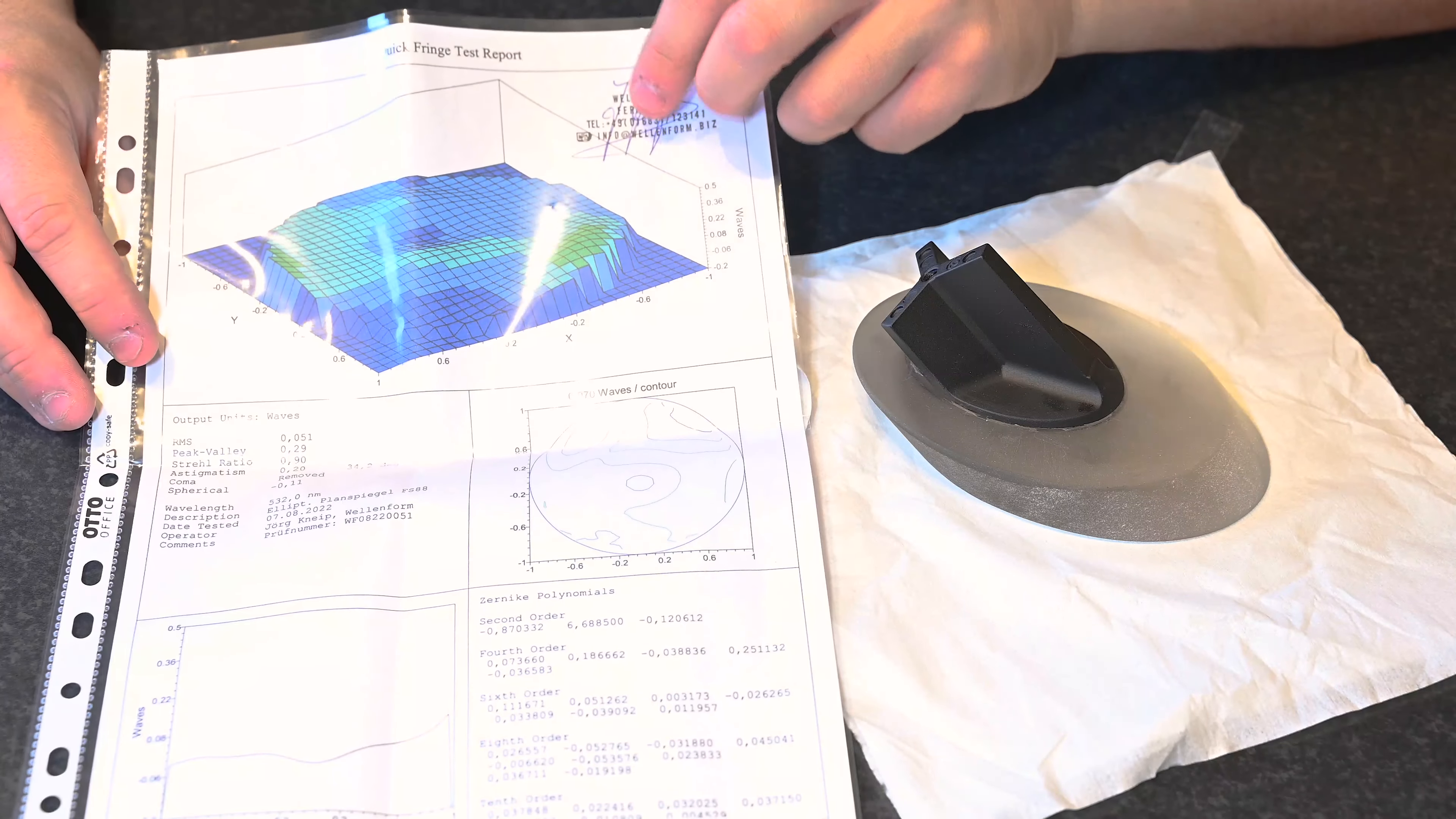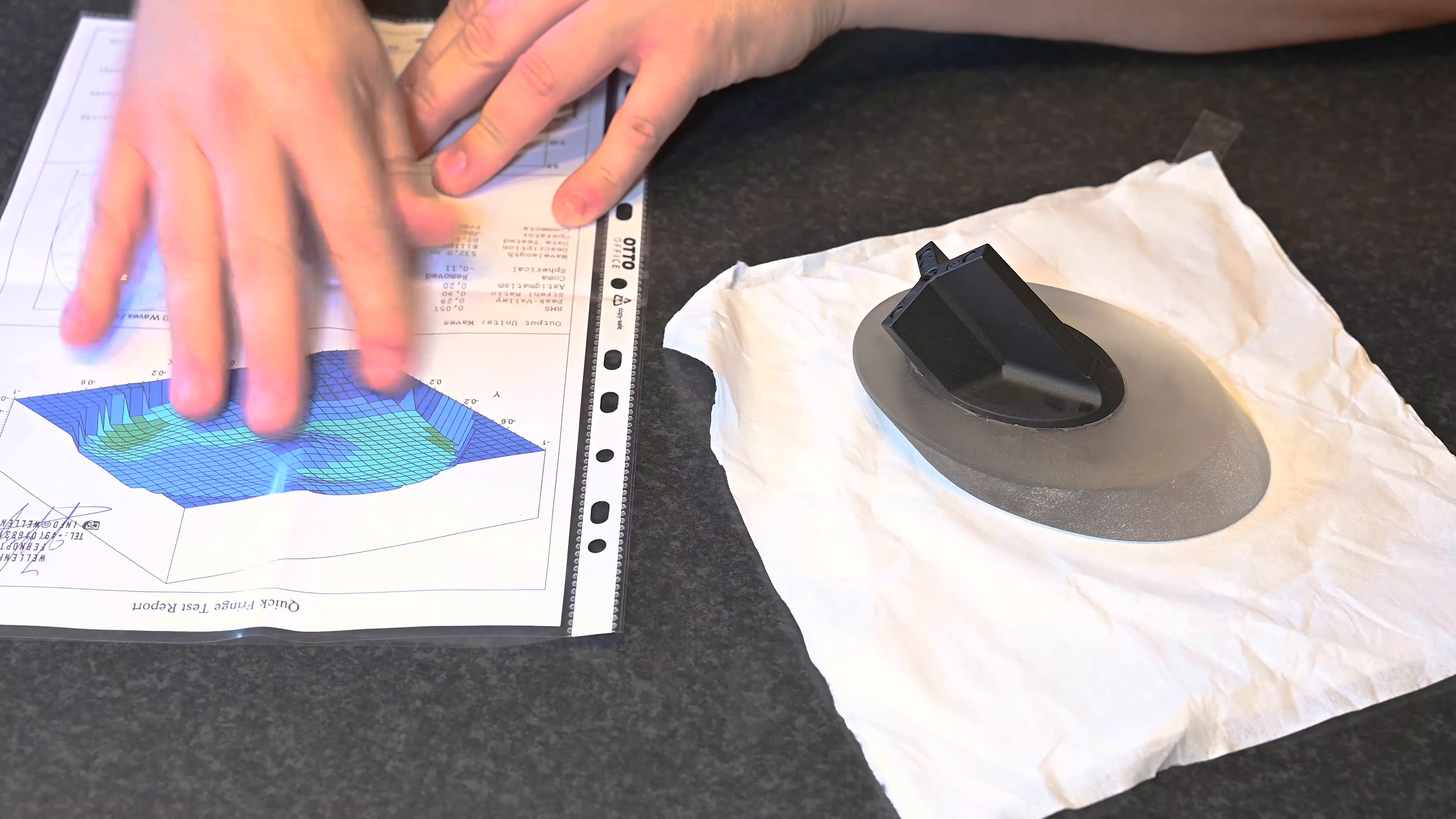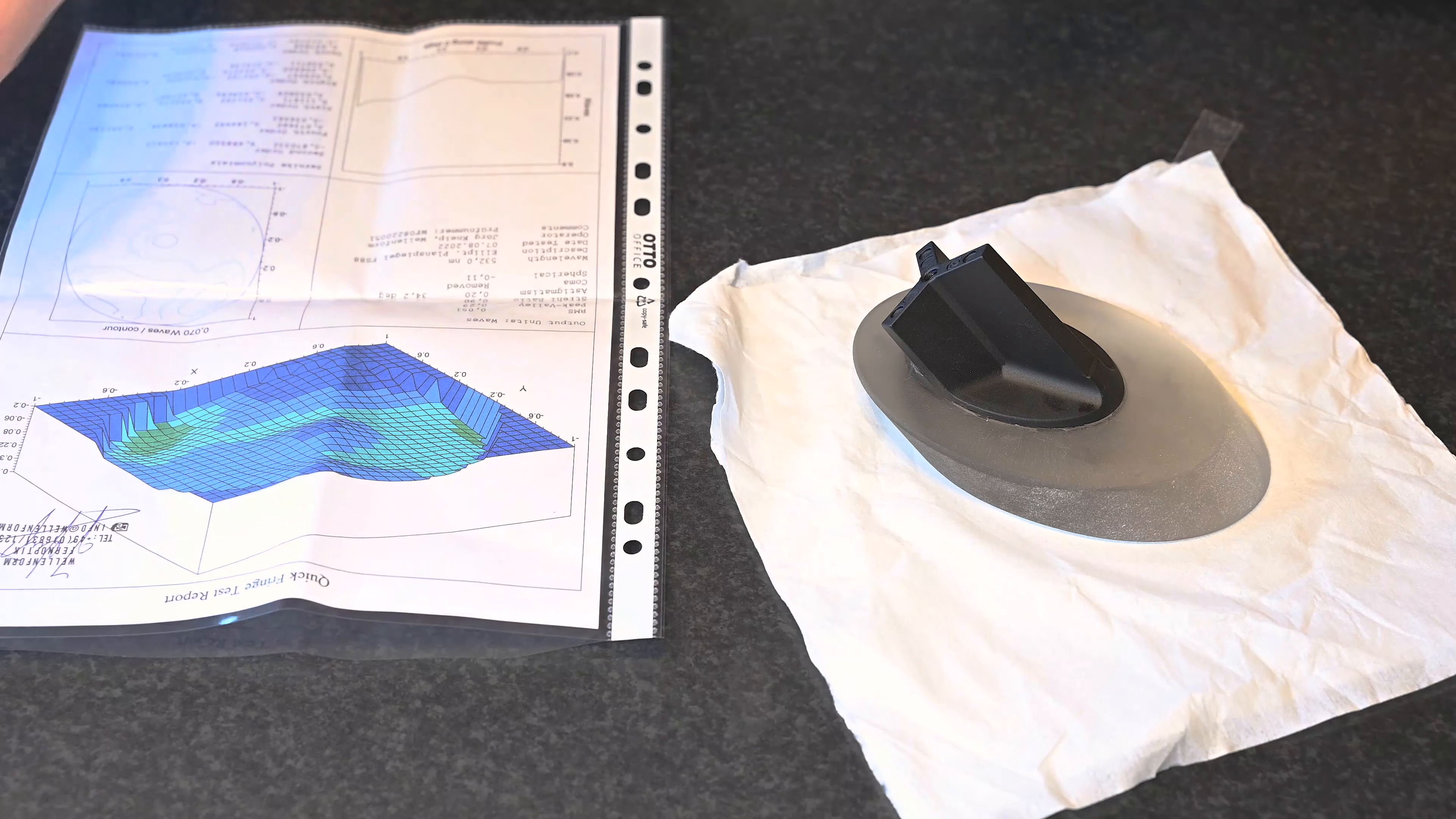Let's dig in the numbers and see what it is, how to measure it. I have a test protocol here. The output is measured in waves. This is a diagram of the peak valley. The peak valley is the difference between the lowest and the highest spot on the mirror, represented in a 3D diagram. We also have a number saying RMS, and that means root mean squared.